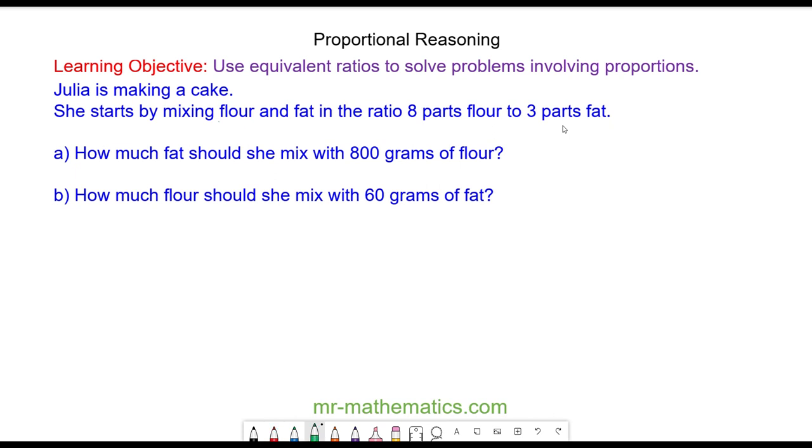So our ratio is flour and fat, and we have 8 parts of flour to 3 parts of fat. And for question A we are asked to work out how much fat she should mix with 800 grams of flour. So the 800 goes on the side of flour. To keep the ratio equivalent we're going to multiply both by 100. So we have 300 grams of fat.